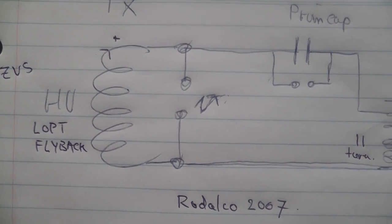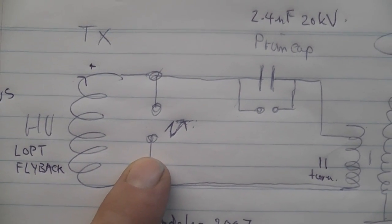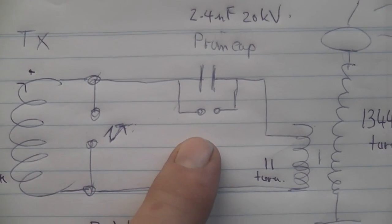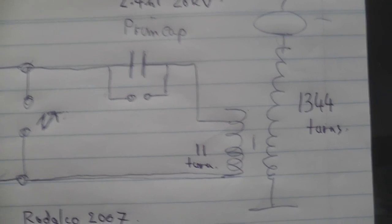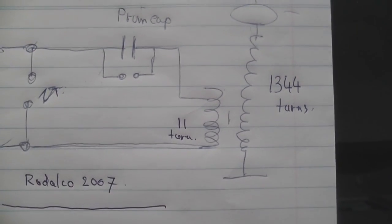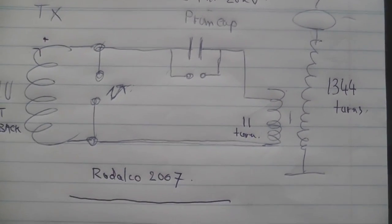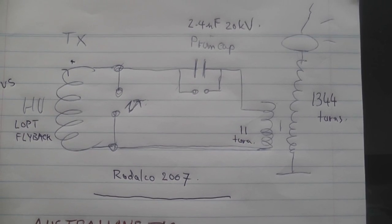This is the basic schematic I've used, just a standard flyback driven by ZVS, arc gap, rotary arc gap, the capacitor spark gap just to protect it, and then 11 turns and 1,344 turns and just an exit wire. And it seems to work at this stage so very pleased with it.